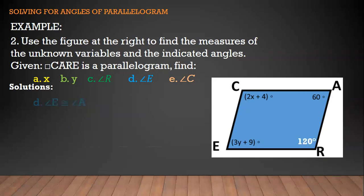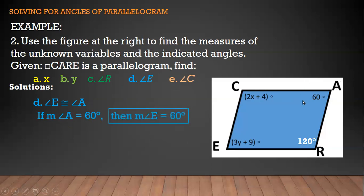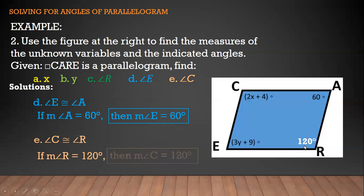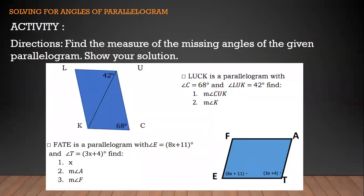Next, find angle E. Since angle E and angle A are congruent to each other, and the measure of angle A is 60 degrees, the measure of angle E is also 60 degrees. Lastly, find angle C. Since opposite angles are congruent, angle C is congruent to angle R. If the measure of angle R is 120 degrees, then the measure of angle C is also 120 degrees. That's all for today — I hope you're learning!